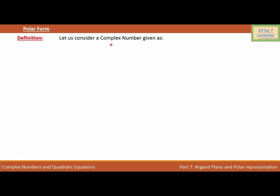Let us consider a complex number given as Z is equal to X plus iY, where X is the real part of the complex number and Y is the imaginary part. If we want to find the magnitude of the complex number, we write modulus R, which is equal to the square root of X squared plus Y squared. This is the magnitude of the complex number Z = X + iY.